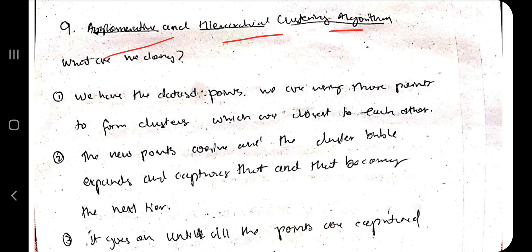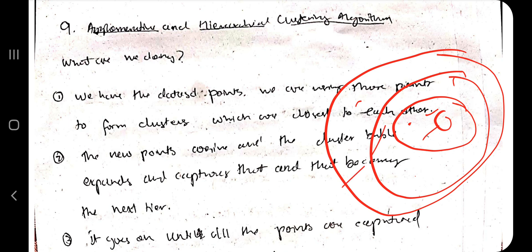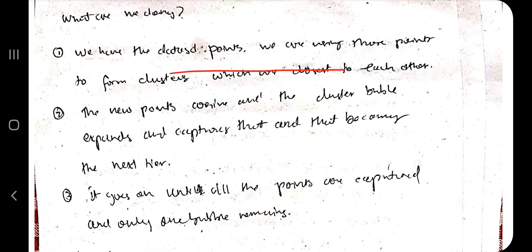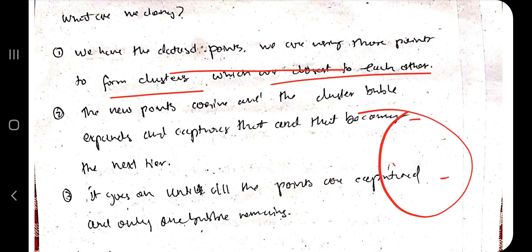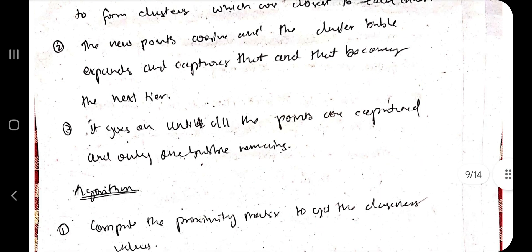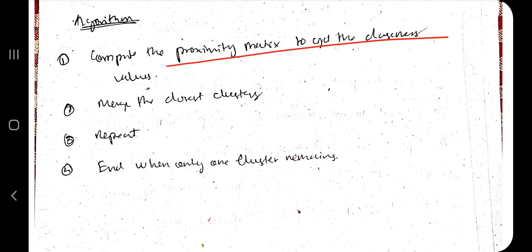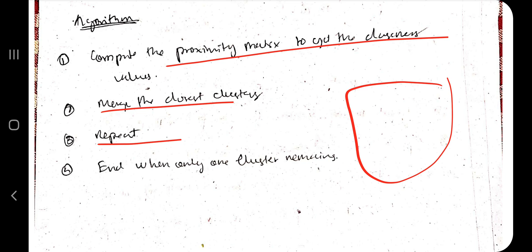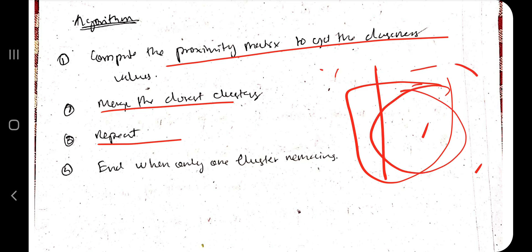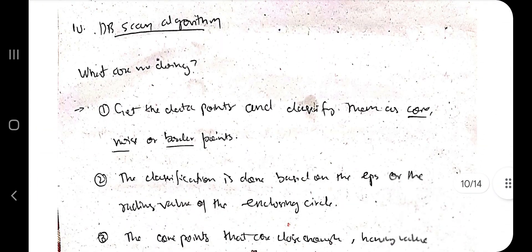Agglomerative (Hierarchical) Clustering works by merging. We start with individual data points and form clusters by merging the closest ones. The cluster 'bubble' expands to capture nearby points as the next tier. We compute the proximity matrix, merge the closest cluster, recompute distances, and keep merging until all points belong to one single cluster.